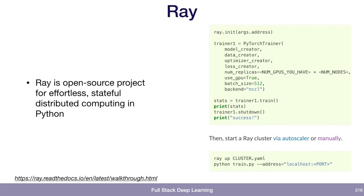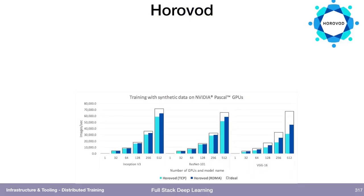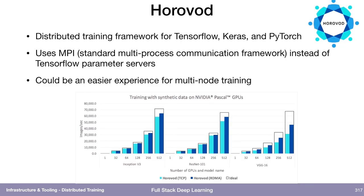If you're doing distributed computation not necessarily using a deep learning framework, Ray is definitely something to look into because it makes it very easy to hold state over distributed machines. There's also a project called Horovod from Uber, which is a distributed training framework supporting TensorFlow, Keras, and PyTorch. Their big innovation was using MPI — the standard multiprocess communication framework — instead of TensorFlow's special parameter server, which was very finicky. People report that Horovod is a much easier experience if you must go to multiple machines.